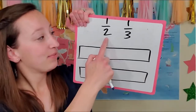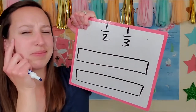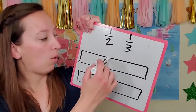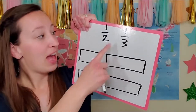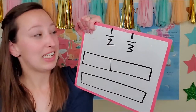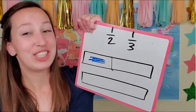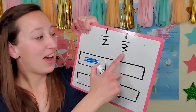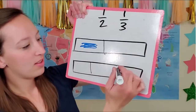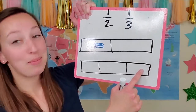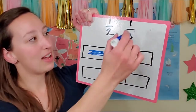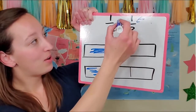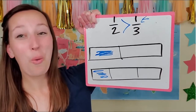Let's do one more: one half and one third. Let's compare. One half — I need two parts to my whole. One, two. How many are going to be shaded in? I need one part shaded in. There's one half. My next fraction: one third. I need three parts to my whole. Three parts. How many are shaded in? My numerator tells me that: one. Wow — one half is greater than one third.